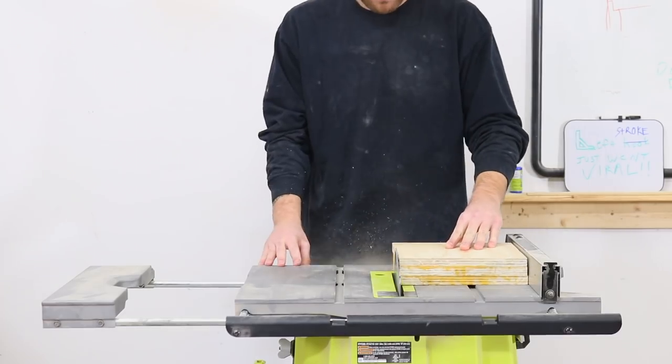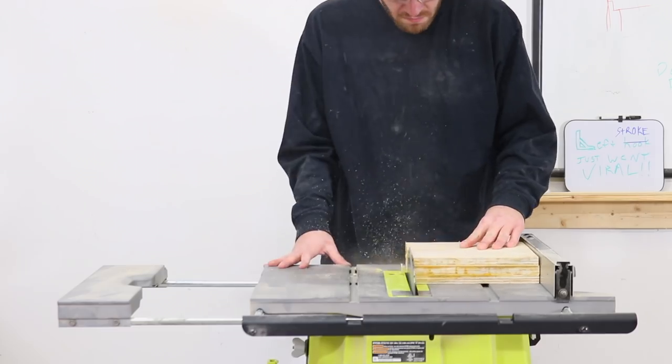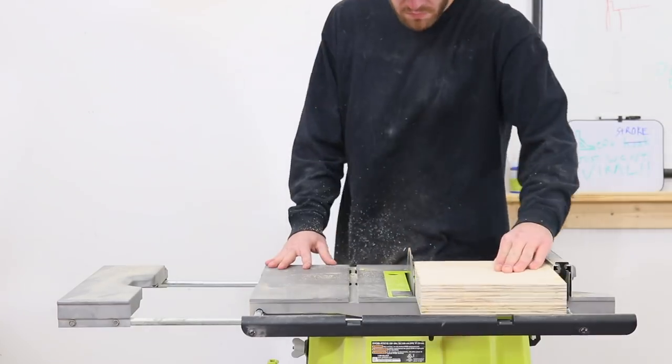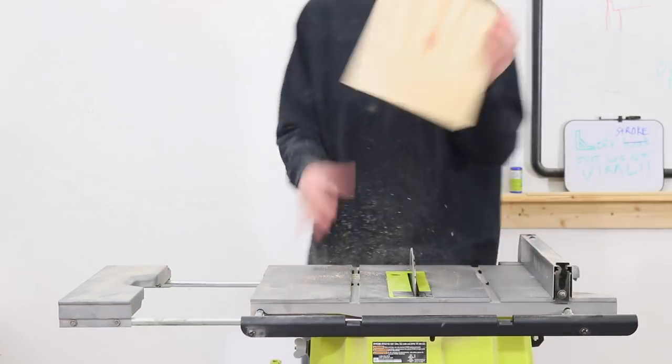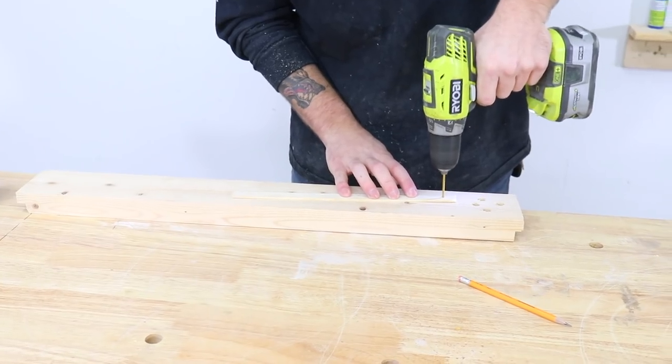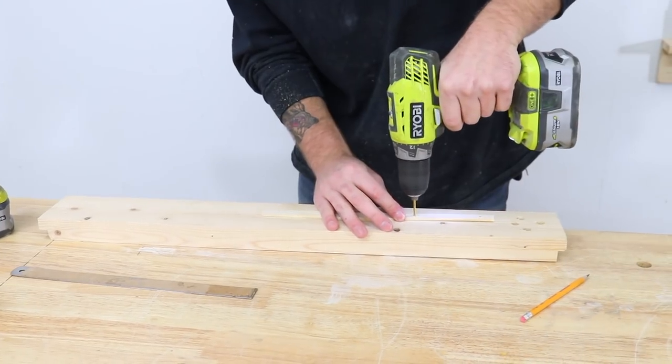Once the glue dried overnight I moved to my table saw to trim up my ends so that they would be square and clean without all that dried glue on them. After that I got a piece of scrap wood to make a homemade compass to mark out a seven inch circle.